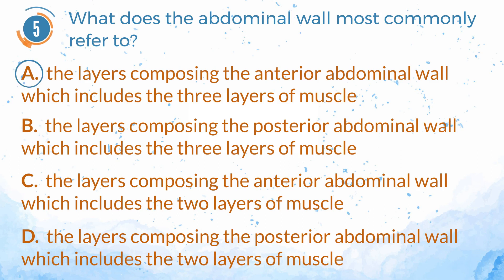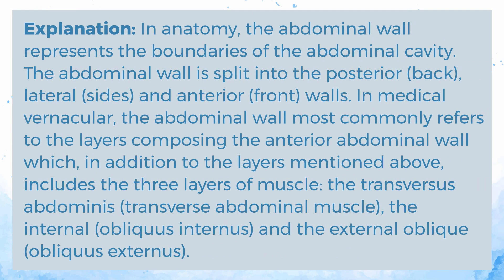The answer is A: the layers encompassing the anterior abdominal wall which includes the three layers of muscle — the transversus abdominis, the internal and the external oblique. Explanation: in anatomy, the abdominal wall represents the boundaries of the abdominal cavity, split into posterior, lateral, and anterior walls. In medical vernacular, the abdominal wall most commonly refers to the anterior wall, which includes three layers of muscle: the transversus abdominis (transverse abdominal muscle), the internal oblique (obliquus internus), and the external oblique (obliquus externus).